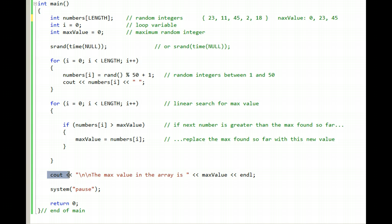So the program couts the max value in the array is max value, which at that point in the program is still this 45.